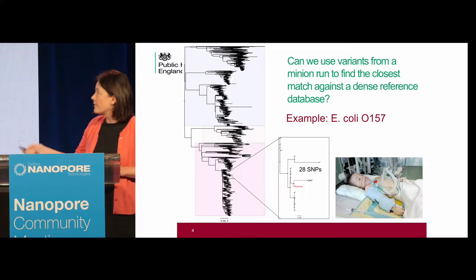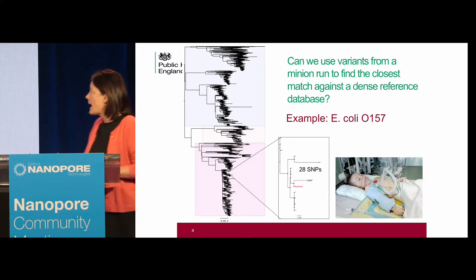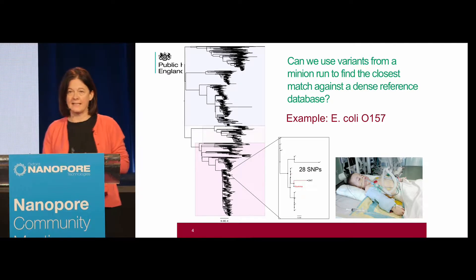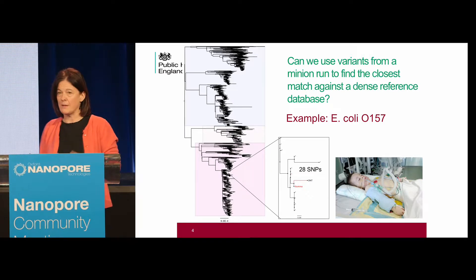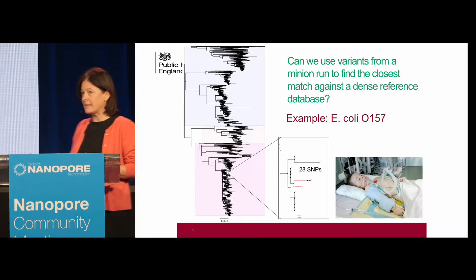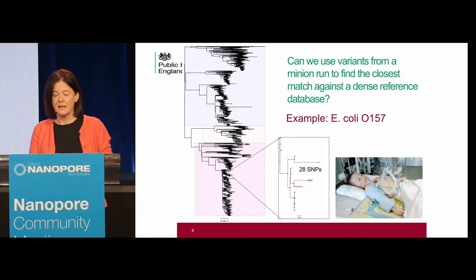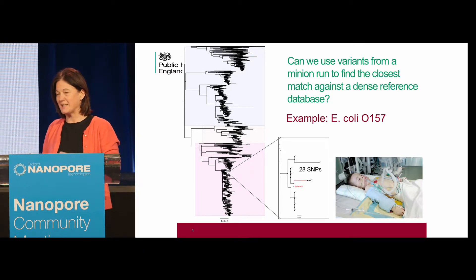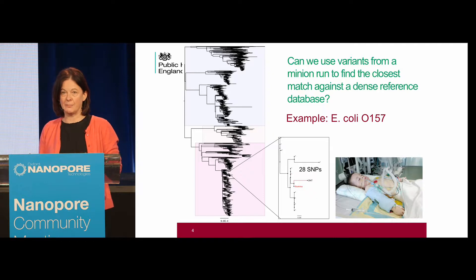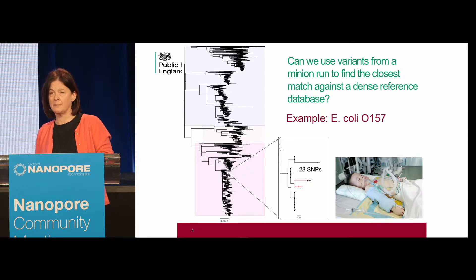This is the phylogeny of O157. The first thing to note is that both the Illumina short-read data and the Oxford Nanopore data could be placed on the same branch of the phylogeny. But comparing those two sequences to a reference strain, we found 28 SNPs difference between them. Before we even looked at the data in more detail, we were assuming this was due to miscalling in the Oxford Nanopore technology data due to poor coverage.